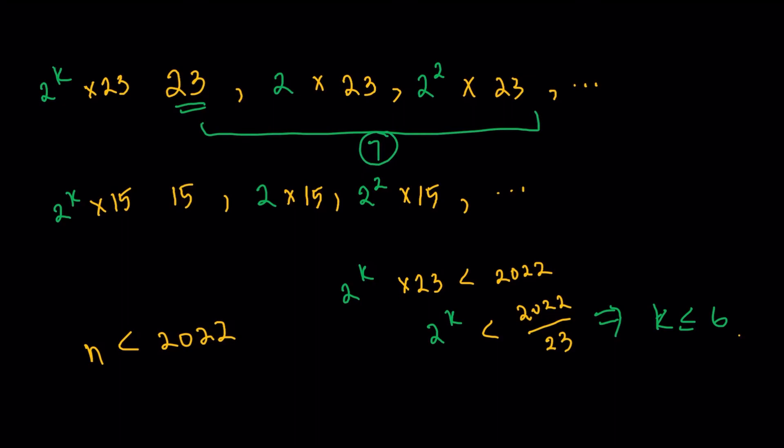We're going to do something similar for the 2 raised to k times 15. 2 raised to k times 15 being less than 2022. And from here, I'll just tell you guys that k would be less than or equal to 7. Again, we don't really need exact calculations here because we're just finding integer values of k. So, k equals 7 would be the largest possible value here. So, counting integers from 0 to 7, that's going to give us that there are 8 numbers in the second case that works. We've checked all cases, 7 from the first case, 8 from the second, a total of 15 possible cases.